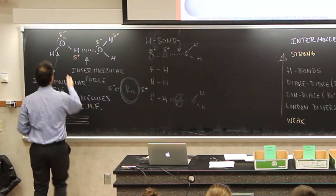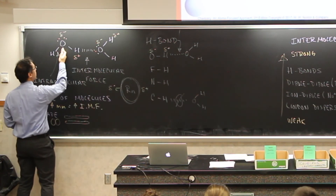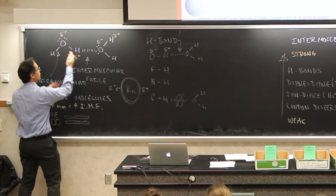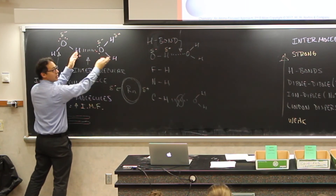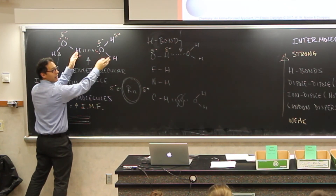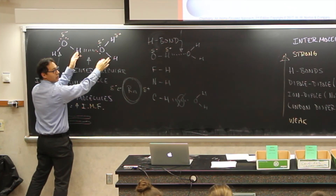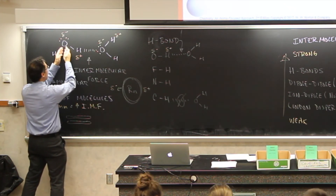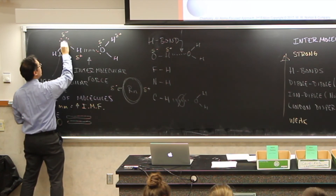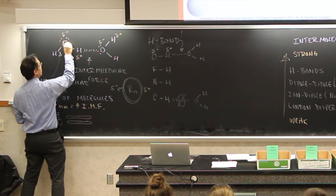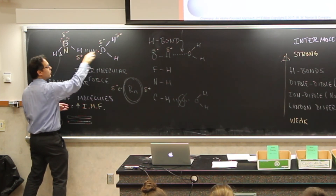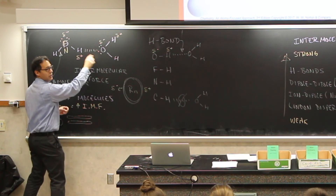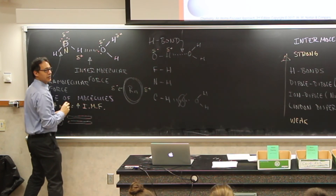It has to be between the hydrogen and some other electronegative element on a different molecule. But that other electronegative element could also be fluorine or nitrogen — and it will still be a hydrogen bond.